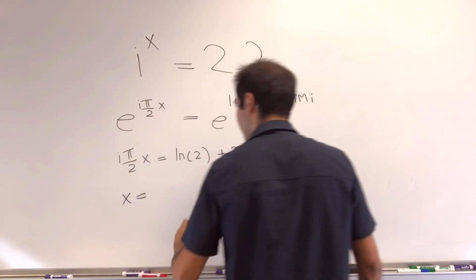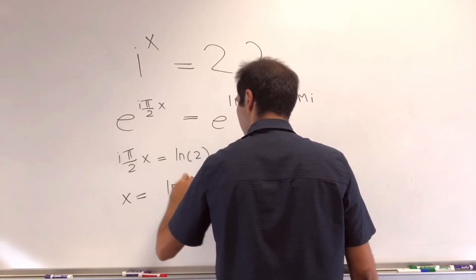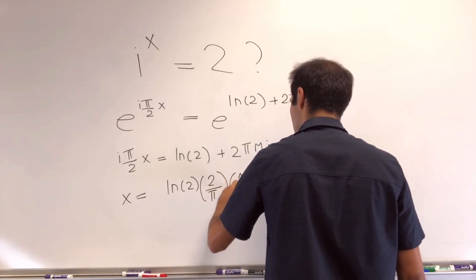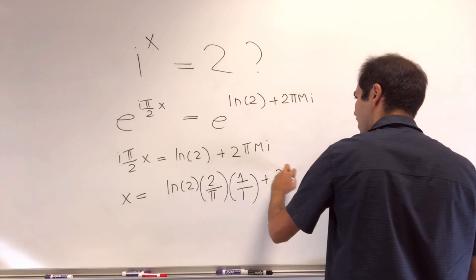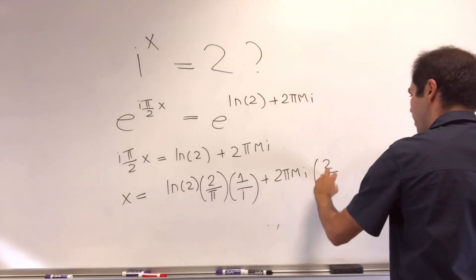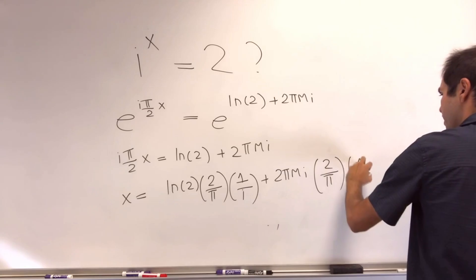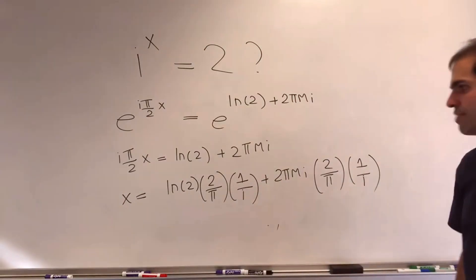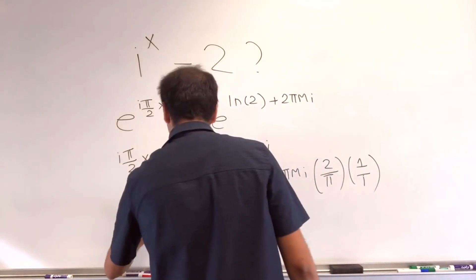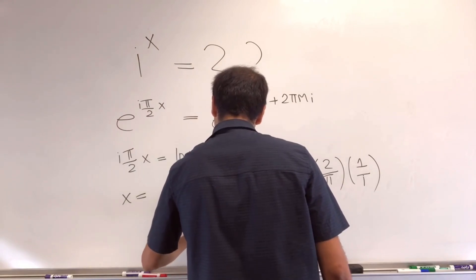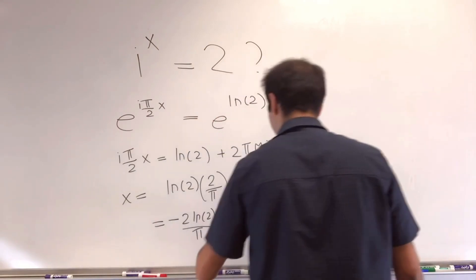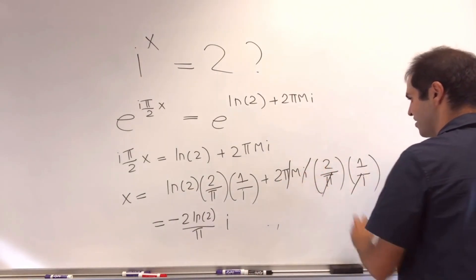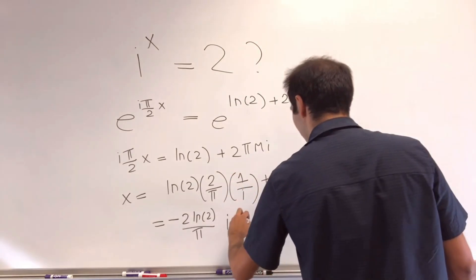So x is ln of 2 times 2 over pi times 1 over i plus 2 pi mi times 2 over pi times 1 over i. And then 1 over i is the same thing as minus i, so we get minus 2 ln of 2 over pi i. And then this simplifies quite nicely, so the pi's cancel out and the i's cancel out, and then plus 4 pi m.